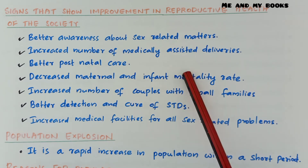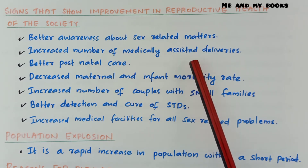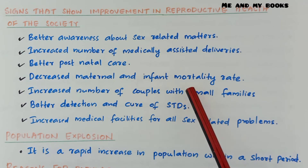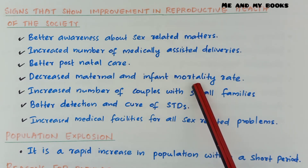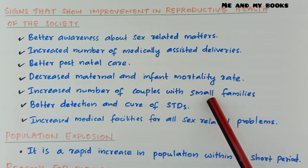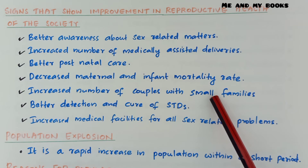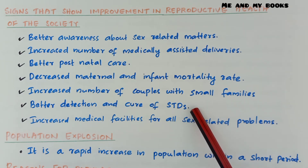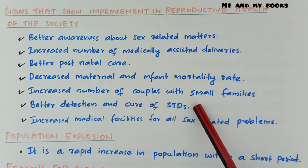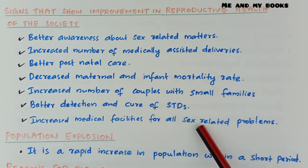Now hospitals are there and facilities are developed, so maternal and infant mortality rates have reduced. Other signs of improvement include: increased number of couples with small families; better detection and cure of STDs; and increased medical facilities for all sex-related problems.